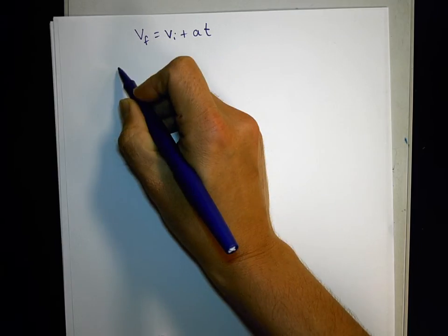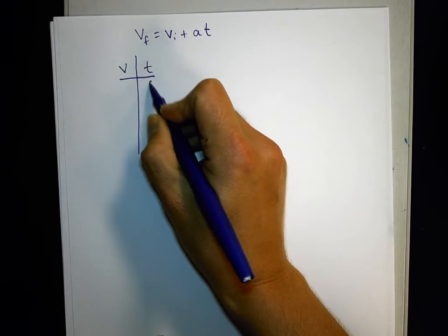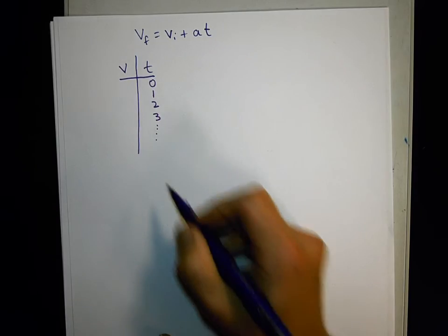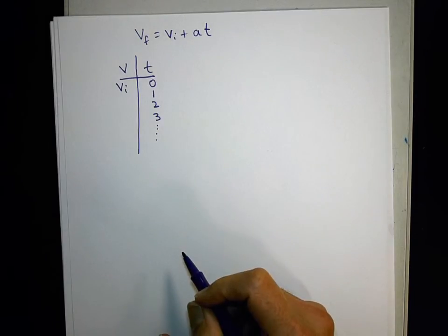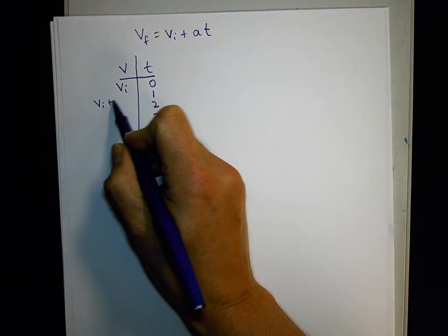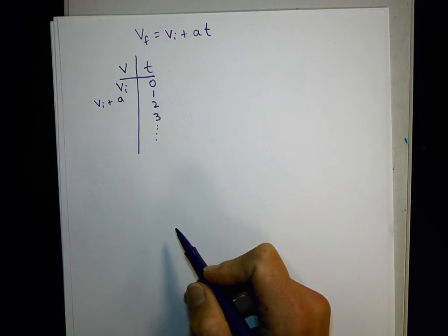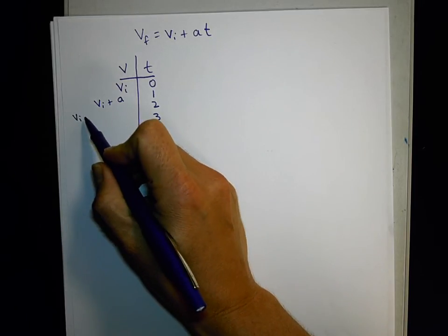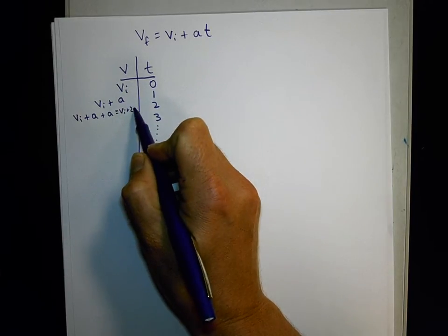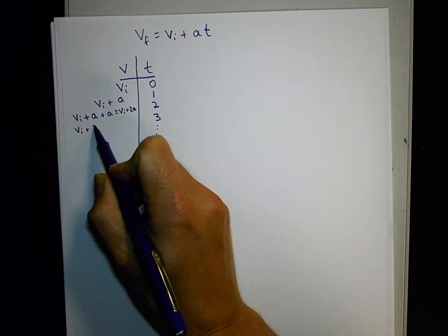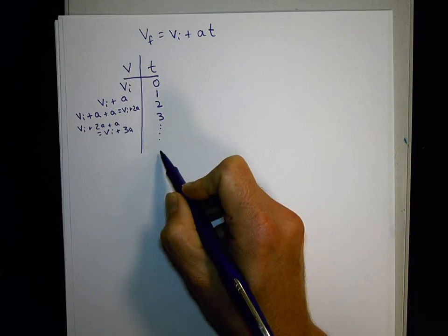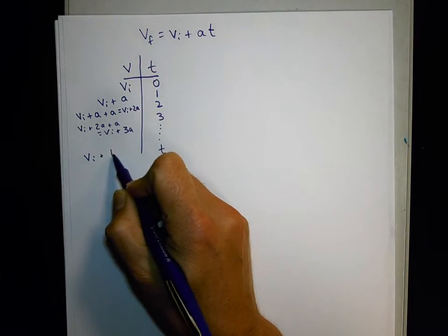One way of doing that is to say, well, if I make myself a little table of zero seconds, one second, two seconds, three seconds, and so on, I come up with a generic expression. If I start with an initial velocity and my velocity changes by A each second, then after one second I'll have A more velocity than I did the one before. After two seconds I'll have an additional A more velocity, or VI plus 2A. After three seconds I'll have an additional A velocity, or VI plus 3A. And if I extend that out to T seconds, then I'll have VI plus TA.